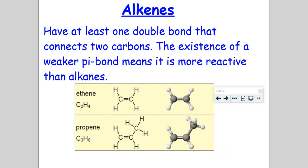So ethene — we know the prefix, the root word is 'eth' for the two carbons we have. Now in its alkane version it would be ethane, but because it's an alkene, it ends with E-N-E. And we have two carbons connected by a double bond. This hydrocarbon is three carbons long, but it's not propane because it's not saturated anymore — we have a double bond here, so we change the ending to E-N-E: propene.